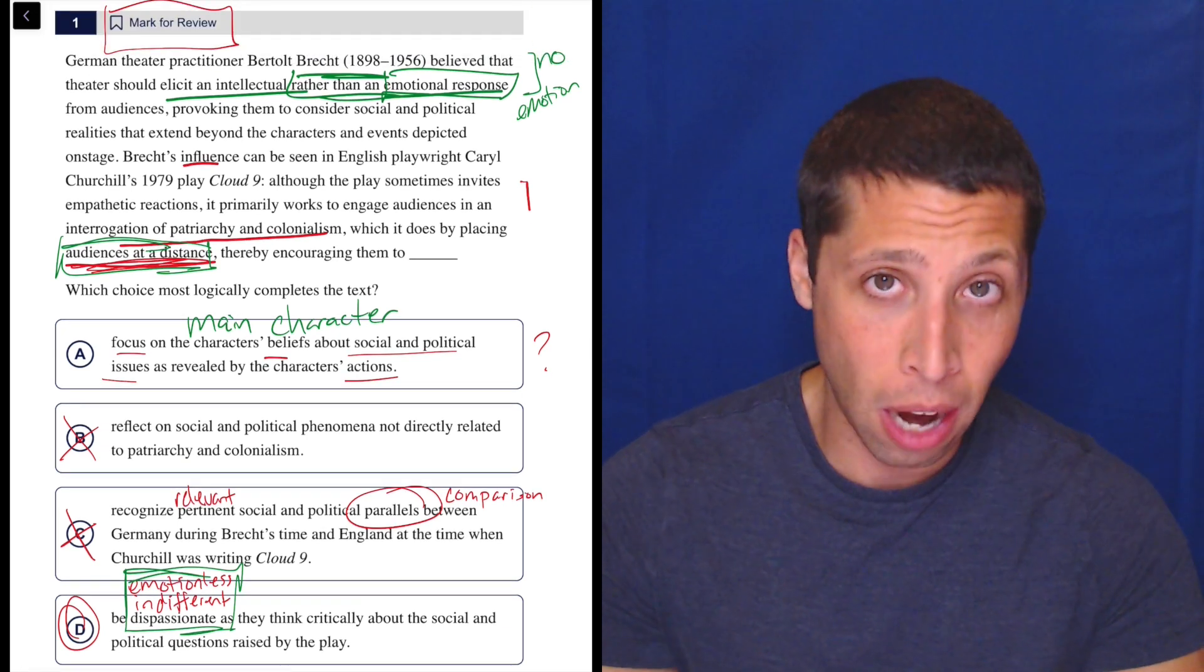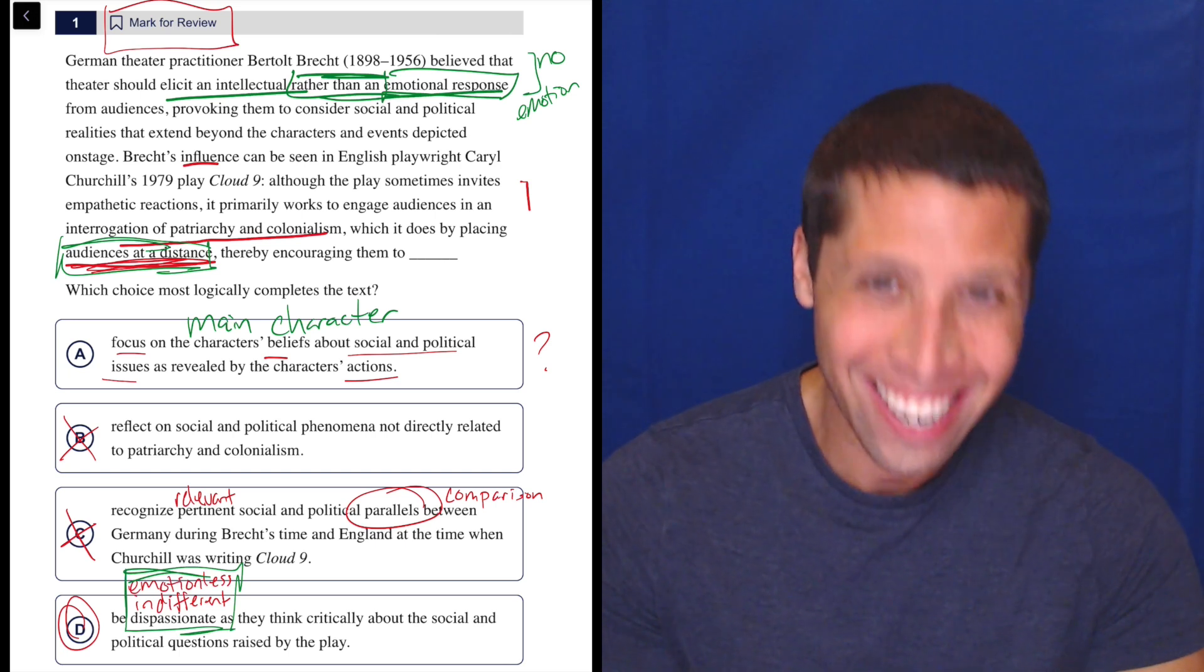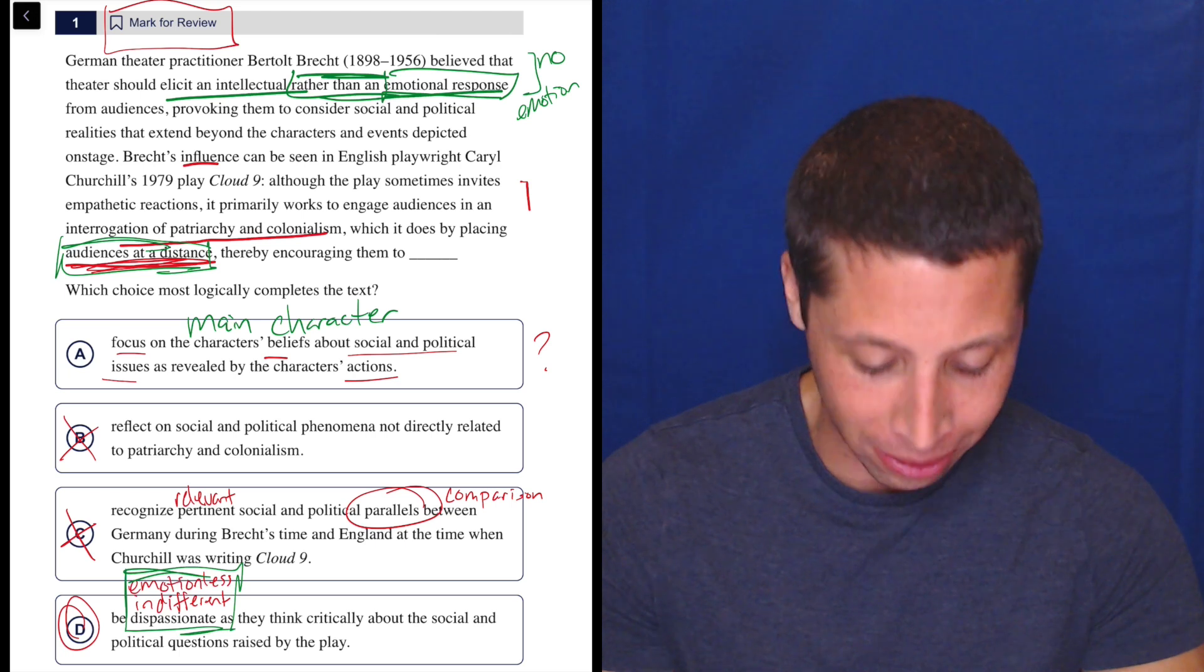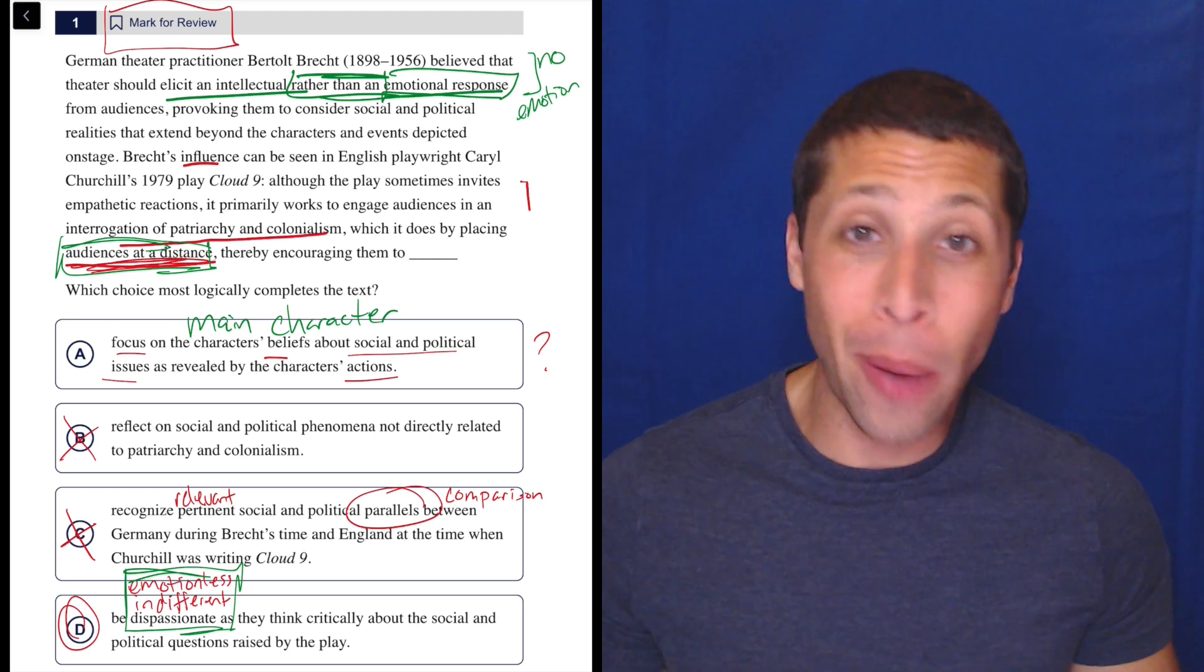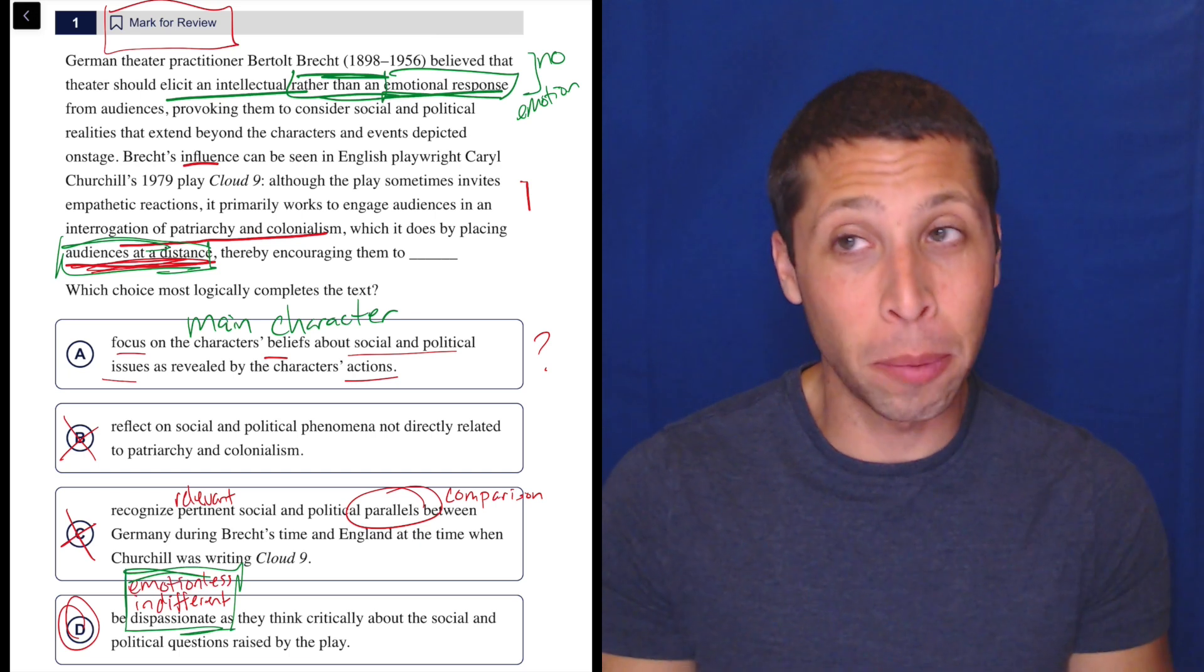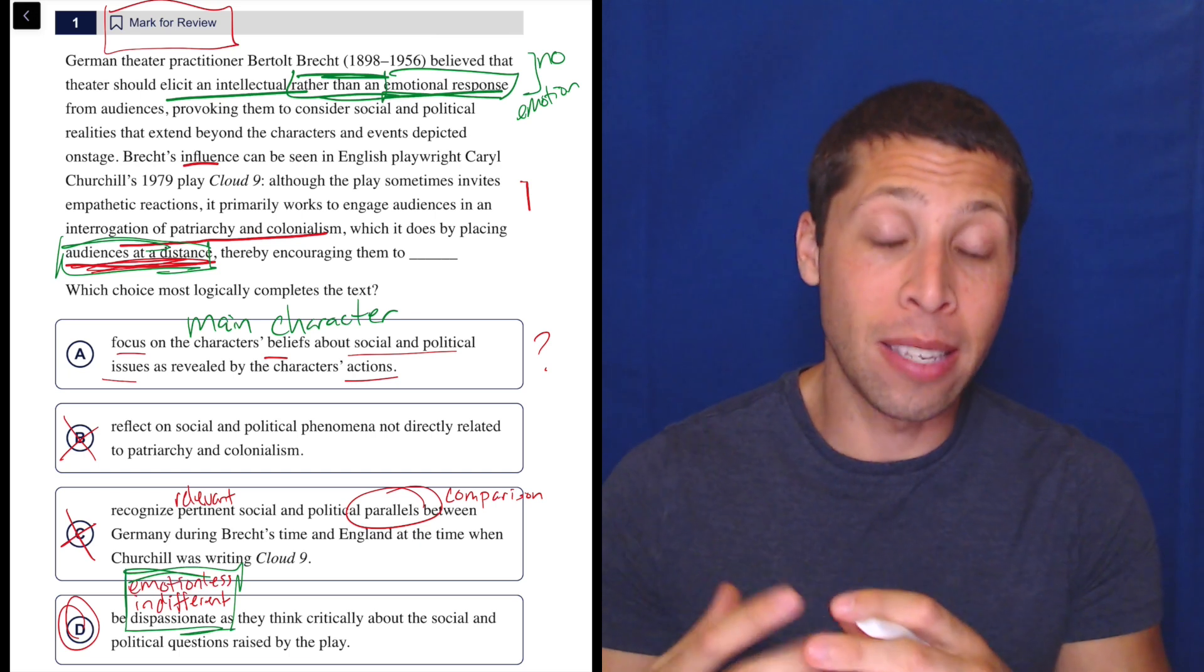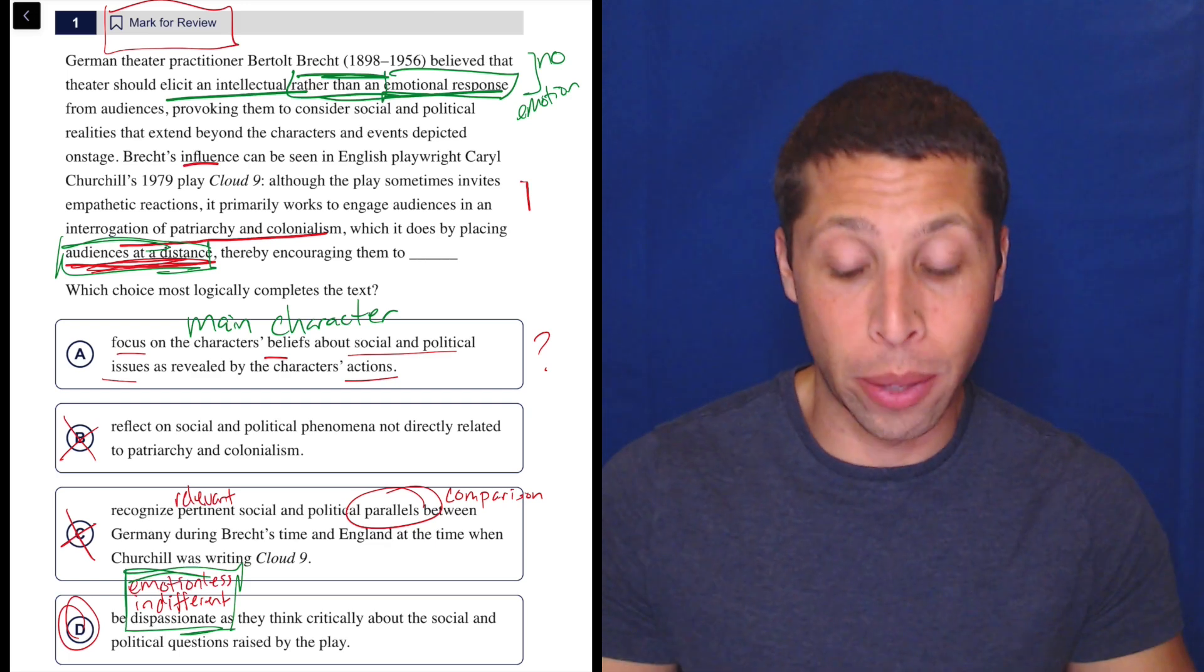The audience should be emotionless, right? So look at D. What's the main character of choice D? It's the emotion. It's the audience that is being emotionless as they critically think about the social and political issues raised by the play. So sometimes we need that wedge, that thing that separates two choices that otherwise seem kind of similar. Choice A seems to be about what the characters are doing. Choice D seems to be what the audience is doing. Brecht is about what the audience is doing, so we've got to go with that.